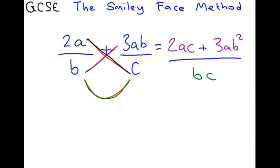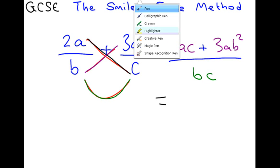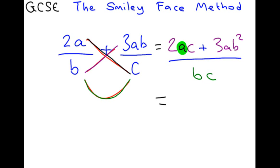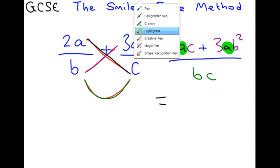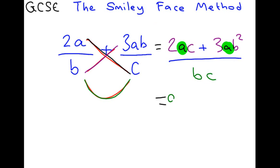Now, this one can't be simplified much more than that. What you could do if you wanted to show off is say, well, guess what? That's a. That's a. That's a. So, what you can do is you can factorize out an a and have 2c plus 3b squared. If you're not sure what I'm doing here, check out my other video on factorizing into a single bracket. That's your answer. It can't be simplified any more than that.